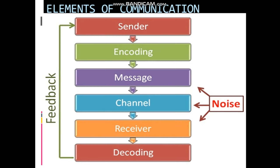Elements of communication. First is sender. Second is encoding. Third is message. Fourth is channel. Fifth is receiver, and lastly is decoding.